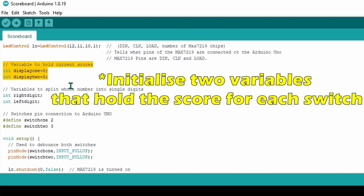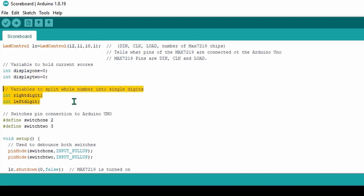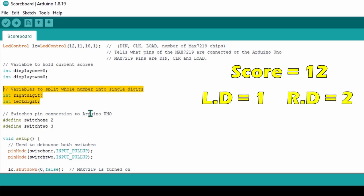We then initialize a variable that will hold the score and variables that will hold the left digit of the score and the right digit of the score. For example, if the score is 12, then left digit will equal 1 and right digit will equal 2. Or if the score is 8, then left digit will equal 0 and right digit will equal 8.